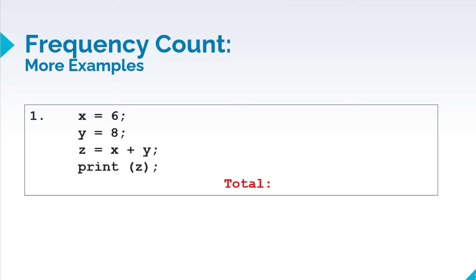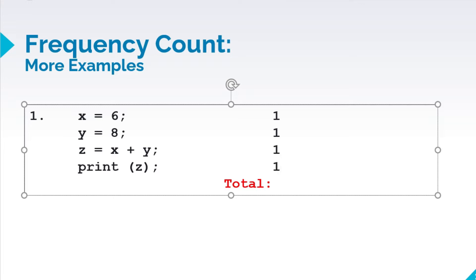And then print z. So if we have simple statements, this is counted as 1. For y is equal to 8, 1. For z is equal to x plus y, 1. And print z, 1. So the total here, we have 4.